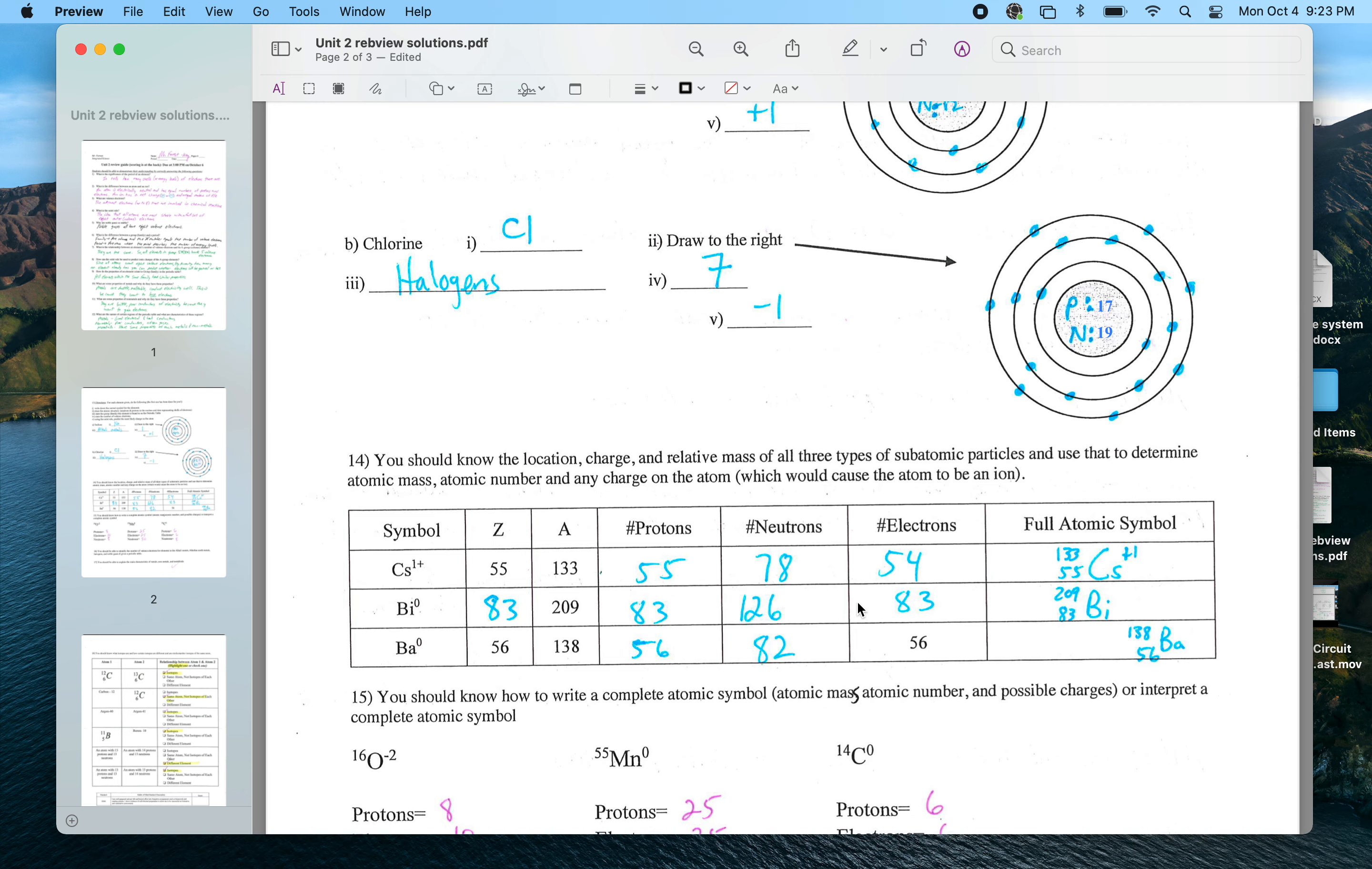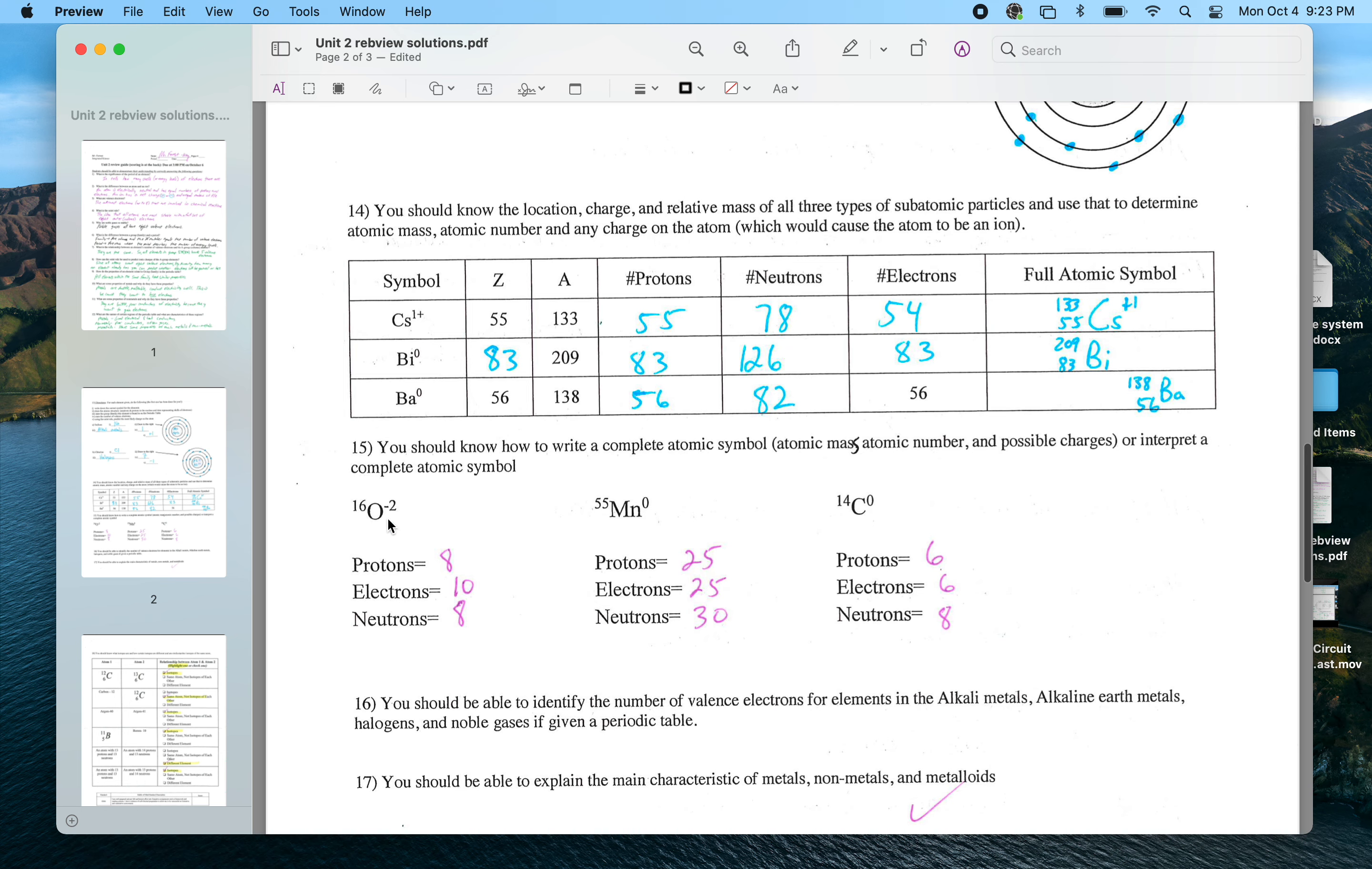So the number of neutrons is the total atomic mass subtracting the number of protons, because both protons and neutrons have some mass. Electrons will equal the number of protons in a neutral atom because each electron has a negative charge, each proton has a positive charge. So 83 positives and 83 negatives give us a neutral atom. Over here we have an ion; it's got a charge of plus one, so if I have 55 positives, I only need 54 negatives. Symbols down here: oxygen in this case would have eight protons because all oxygen has eight protons; its atomic number is eight. Magnesium or manganese has 25 protons; its atomic number is 25.